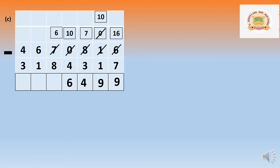In the ten-thousands place, after giving, it has become 60 thousand. We cannot minus 80 thousand, so we borrow from the lakh number. 6 lakh gives 1 lakh, becoming 5 lakh. After taking, 60 thousand becomes 160 thousand — in two-digit form: 16 minus 8 equals 8.